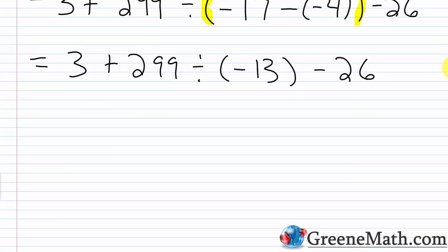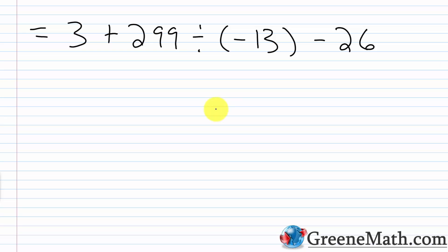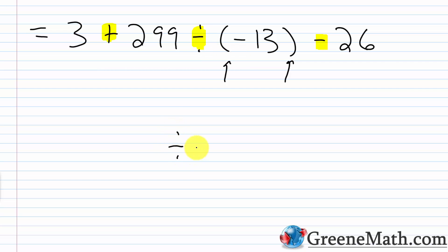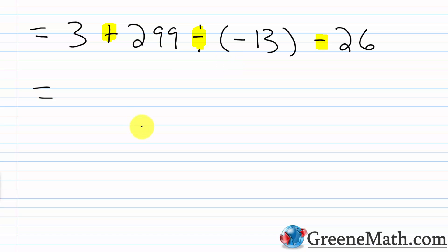We're done with all the grouping symbols. Now all we need to do is look at our operations: we have addition, division, and subtraction. Although we have parentheses around negative 13, the only reason those parentheses are there is so I don't have division and then a subtraction symbol right next to each other. So now I want to divide before I do anything else. What is 299 divided by negative 13? Well, I know it's negative, but what's 299 divided by 13?